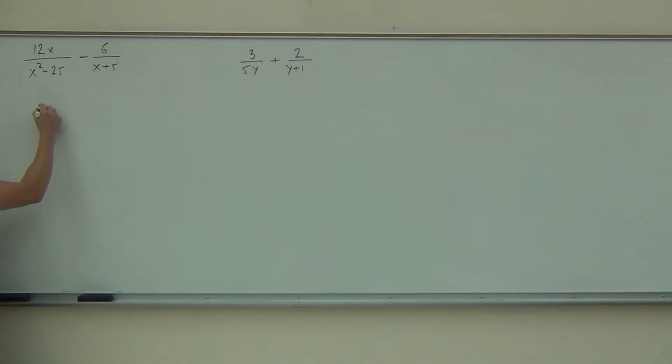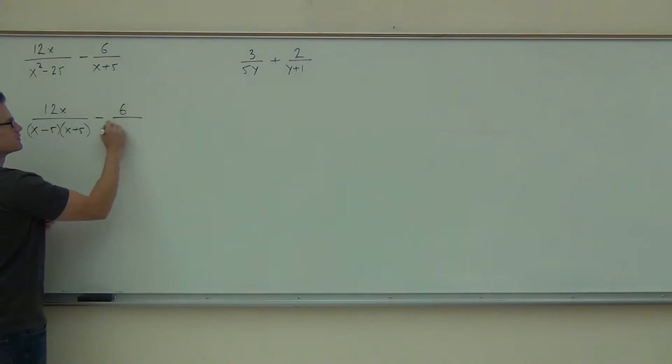We're going to get 12X over what's that factor as? X plus 5 times X minus 5. And you know, it really doesn't matter the order. You can switch those things around. It's fine. Did you factor that okay?